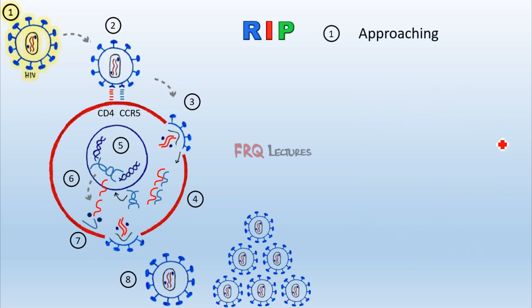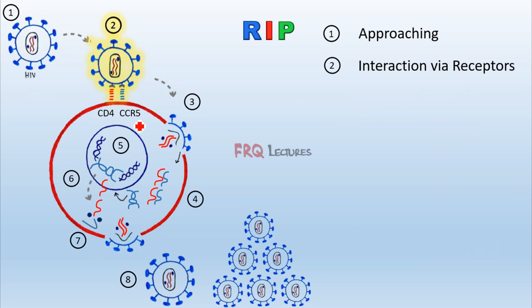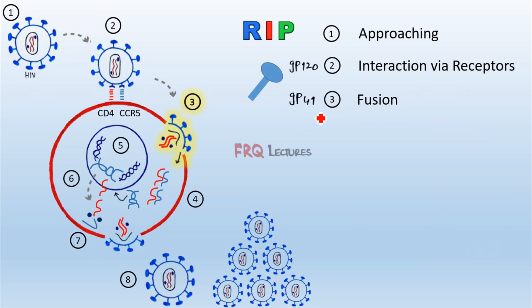To recap the whole cycle: first, HIV approaches the macrophage. In the second step, it interacts with the macrophage using two receptors — the CD4 receptor and the CCR5 receptor. Then, fusion occurs. Fusion is made possible by gp41, a portion of the glycoprotein. So gp41 is involved in fusion while gp120 is involved in the initial receptor interaction.